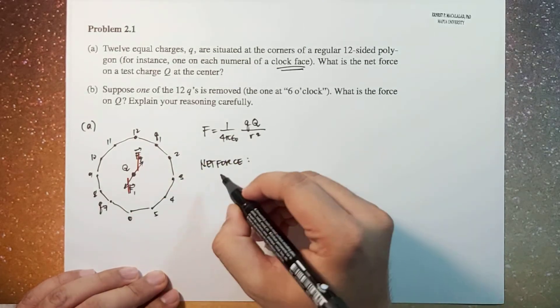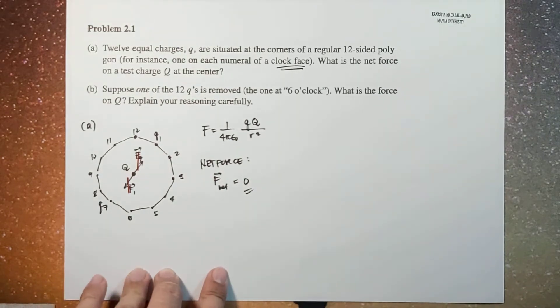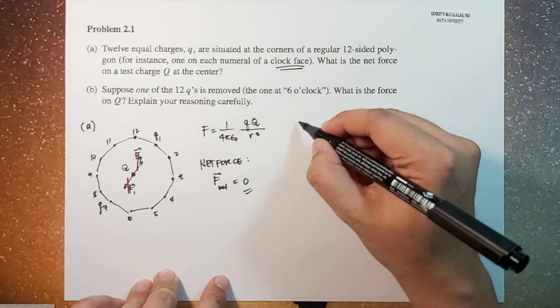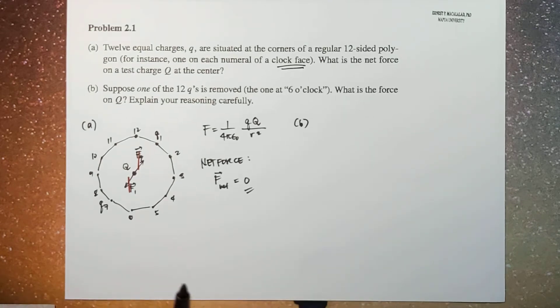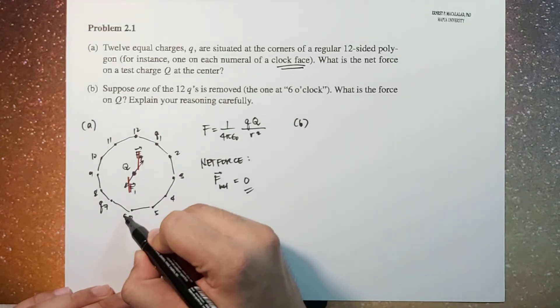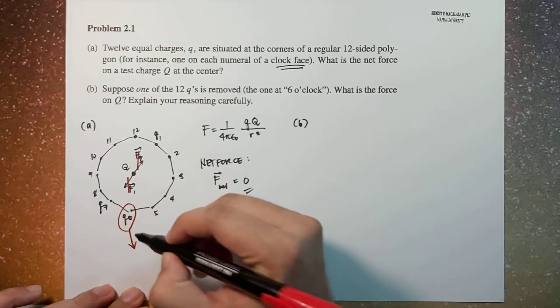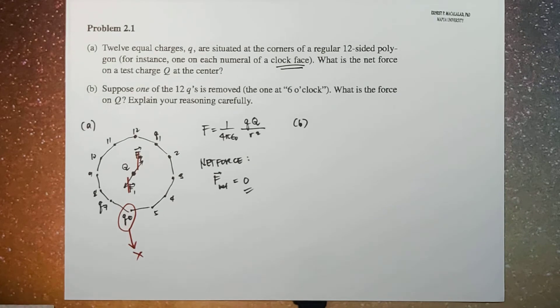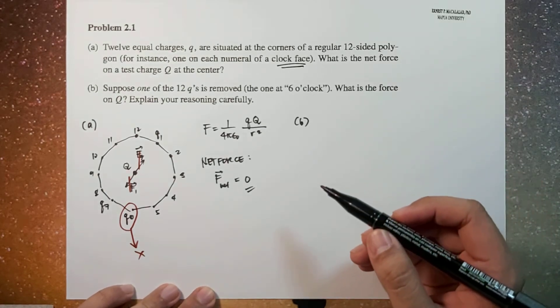Very simple, right? Now what happens if one of the 12 charges is removed? So let's say we remove q6. So this will now be removed, so right now we are left with 11 charges. As I mentioned earlier...